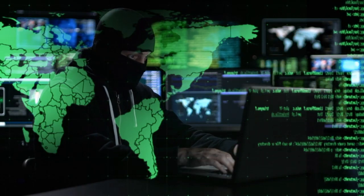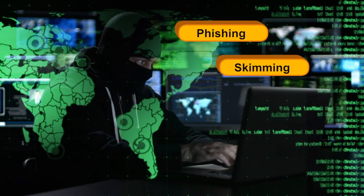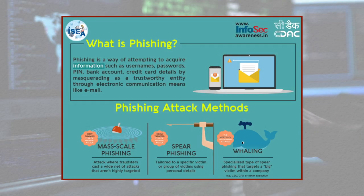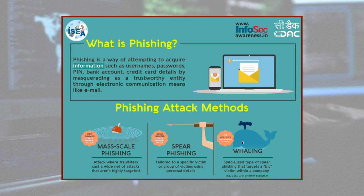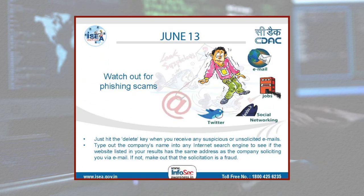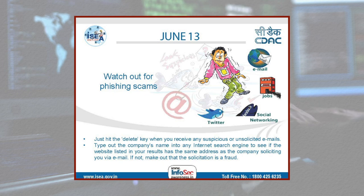Hackers use complex techniques like phishing to gain credit card information from innocent users. Phishing is a way of attempting to acquire information such as username, passwords and credit card details by masquerading as a trustworthy entity in an electronic communication. Phishing is typically carried out by email spoofing or instant messaging and it often directs users to enter details at a fake website whose look and feel are almost identical to the legitimate one.